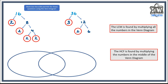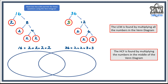For 36 we've got 3 times 12, then 2 times 6, and 2 times 3 to finish it off. Listing those: 16 equals 2 times 2 times 2 times 2, and 36 equals 2 times 2 times 3 times 3. I always like to put them in order because it becomes easier to spot the numbers shared between both when filling in the Venn diagram.